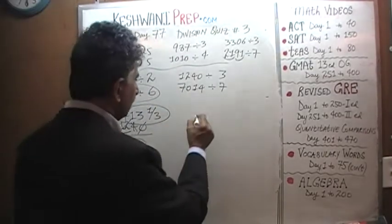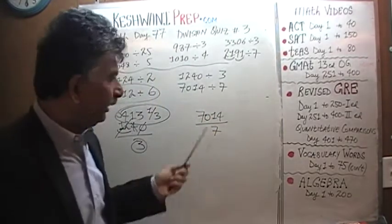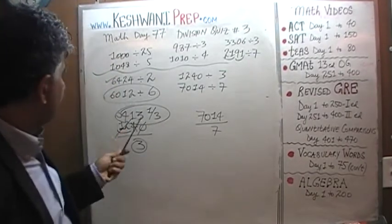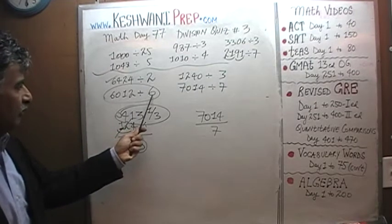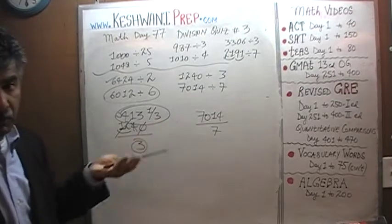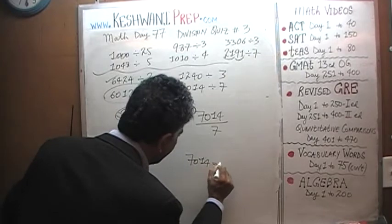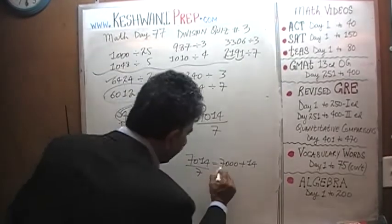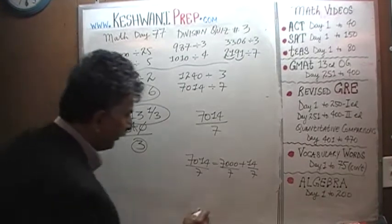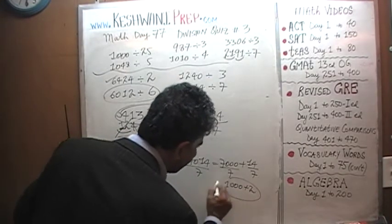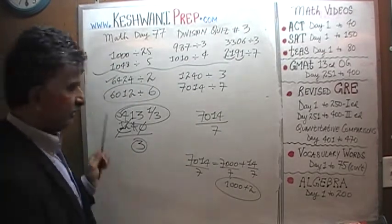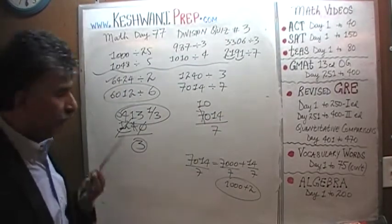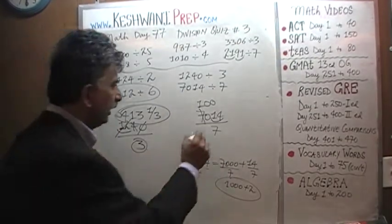The last one is a very simple question. By visual inspection, we can tell that 7,014 is divisible by 7 because 7,000 is divisible by 7 and 14 is divisible by 7 — just like the previous problem where we had 6,000 and 12. So 1,002 is going to be the answer, because 7,014 is simply 7,000 plus 14, and dividing each by 7 gives 1,000 and 2. Working it out: 7 has one 7; 0 has no 7; 1 has no 7, so it joins the 4 to become 14, and 14 has two 7s. The answer is 1,002.